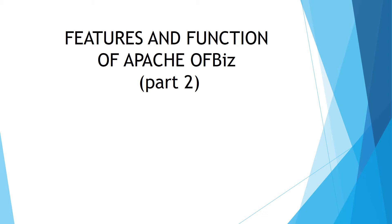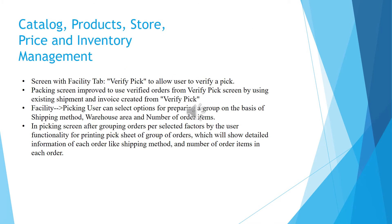Other group mates will do the demo. Catalog products store price and inventory management screen, with a facility tab to allow users to verify a pick. The packing screen is improved to verify orders from the verify pick screen by using existing shipment and invoice created from the verify pick facility. Users can select options for preparing a group on the basis of shipment method, warehouse area, and number of ordered items in the picking screen.